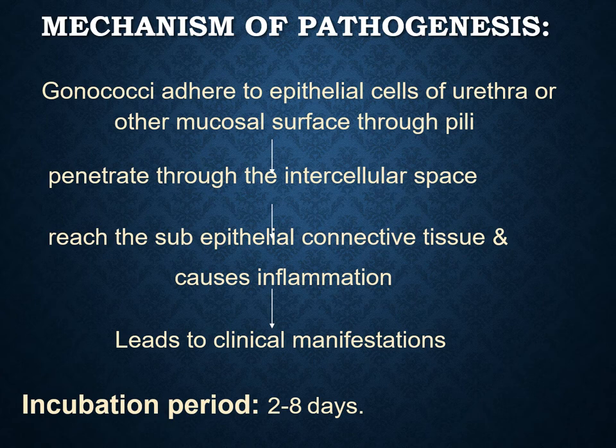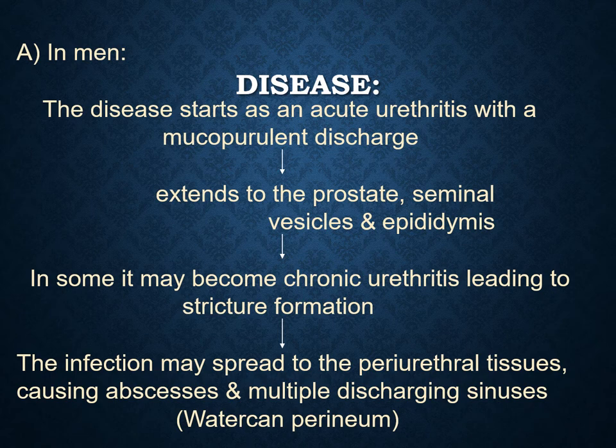The incubation period for Neisseria gonorrhoeae is about two to eight days. In men, the disease starts with acute urethritis with a mucopurulent discharge, which then extends to the prostate, seminal vesicles, and epididymis. In some cases it may become chronic urethritis leading to stricture formation. After that, infection spreads through the periurethral tissues causing abscesses and multiple discharging sinuses in the perineum.